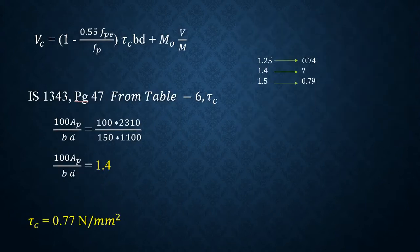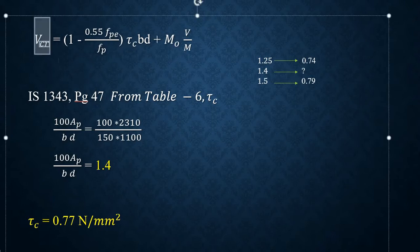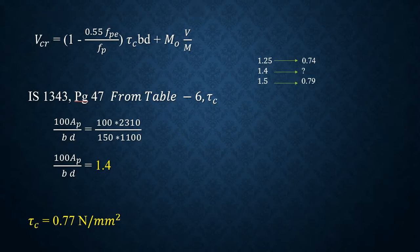Next, let's start with the calculation. First of all, we require ultimate shear resistance for a section. So for ultimate shear resistance for a section, Vcr formula is (1 - 0.55 × fpe/fp) × τc × b × d + M0 × V/M. Here you can make this as Vcr. This is available in page 46 IS 1343. Now for this formula, whatever terms are not there we should calculate. If we observe here, we have all the terms except τc and M0.